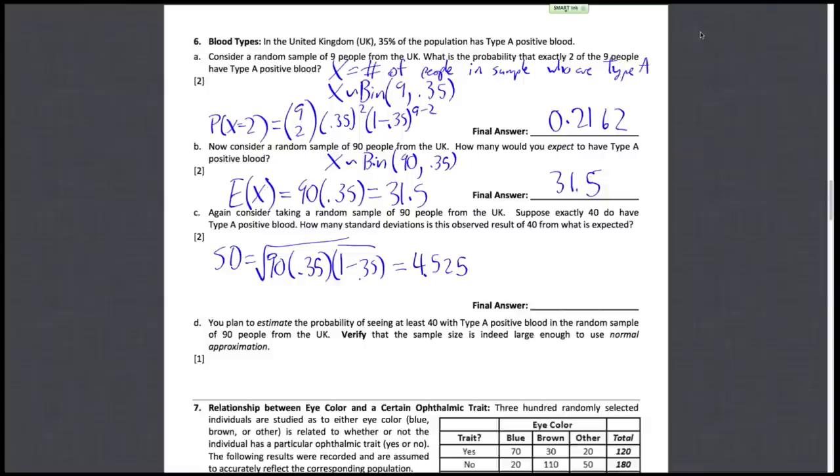So we have 40 is what we found. What we expected is what we found in part B is 31.5. So we want to find the number of standard deviations away this is or the z-score. So the z-score here is just the observed minus the expected divided by the standard deviation.